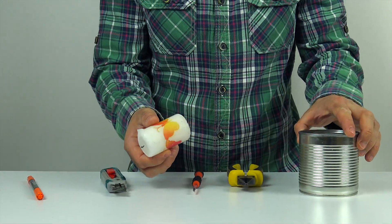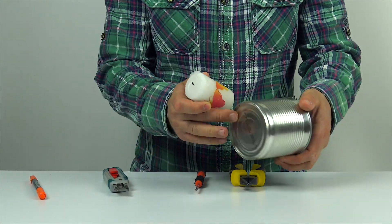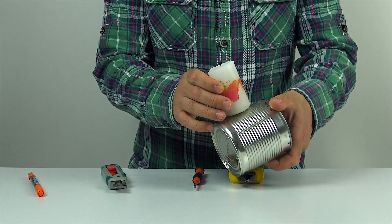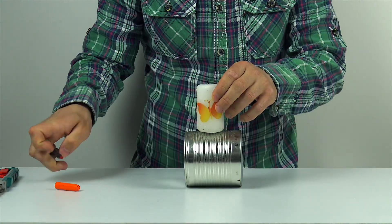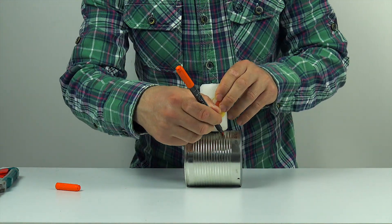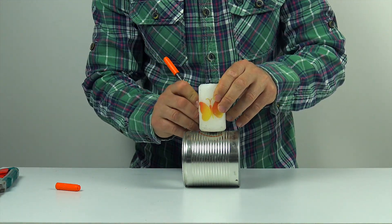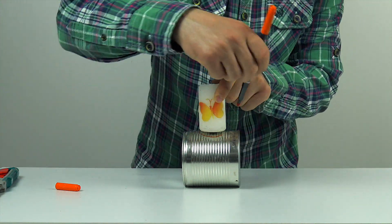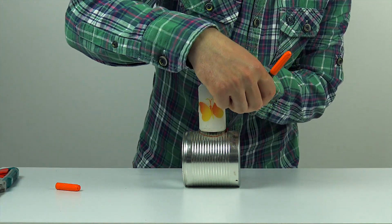The second idea is even simpler, and perhaps more brilliant than the first. Using an ordinary empty tin can, you can recreate an authentic 19th century lantern. These kinds of designs were quite popular back in the day, though they looked a bit different.